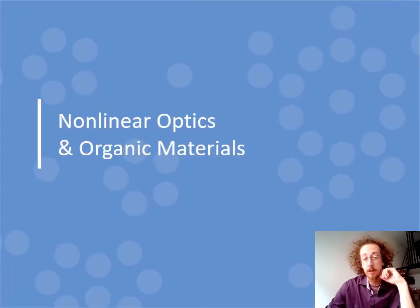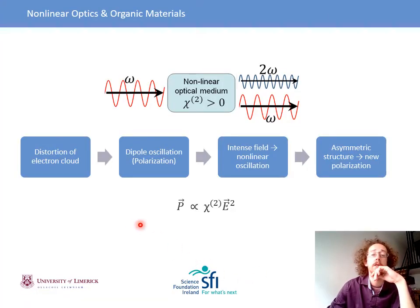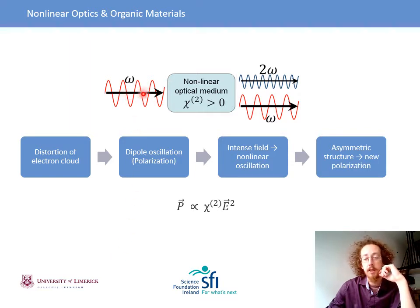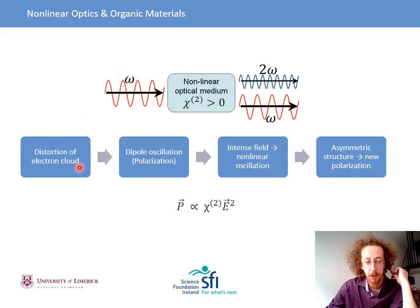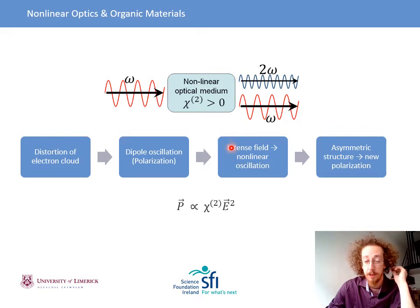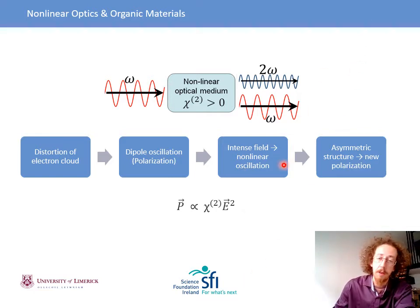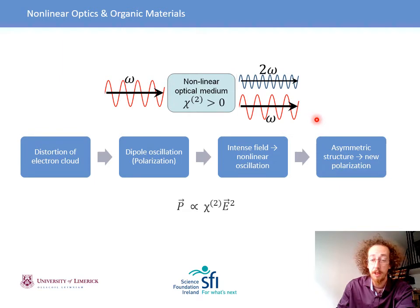Just to give an introduction to non-linear optics and organic materials: I'm sure you're all familiar with linear optics, where you have effects such as refraction, diffraction, birefringence, all that fun stuff. But in non-linear optics, it's the study of when a very intense electric field, like that found in a laser, is incident on a medium. Say you have a laser of frequency omega shining onto a non-linear medium — you have a distortion of the electron cloud, which causes dipole oscillations, the effect of which manifests as a polarization. Because we have this intense electric field, we can model this dipole oscillation as a non-linear oscillator, so we get new frequency components emerging that are different from the incident. And if you have an asymmetric structure — referring to crystal symmetry — if there's no axis of symmetry in the crystal, you get to keep these new polarization components.